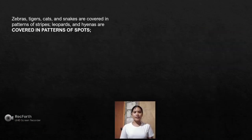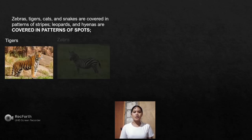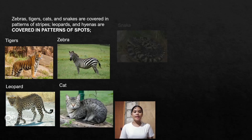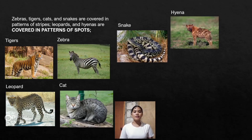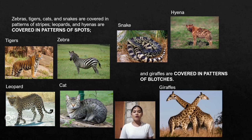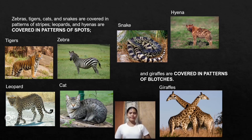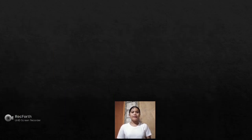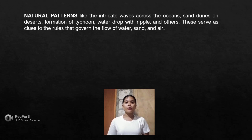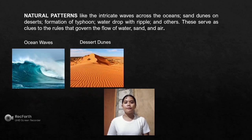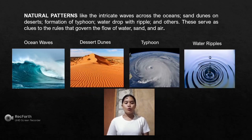Zebras, tigers, cats, and snakes are covered in patterns of stripes. Leopards and hyenas are covered in patterns of spots, and giraffes are covered in patterns of blotches. Natural patterns like the intricate waves across the oceans, sand dunes on deserts, formation of typhoons, and water drops with ripples also appear in nature.